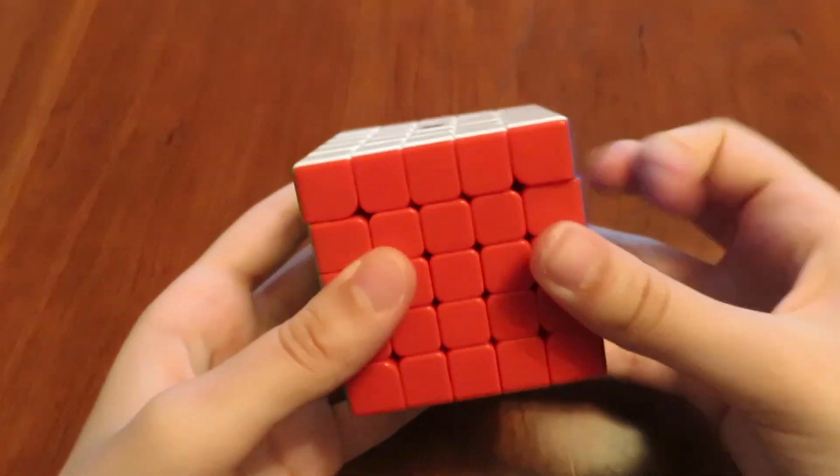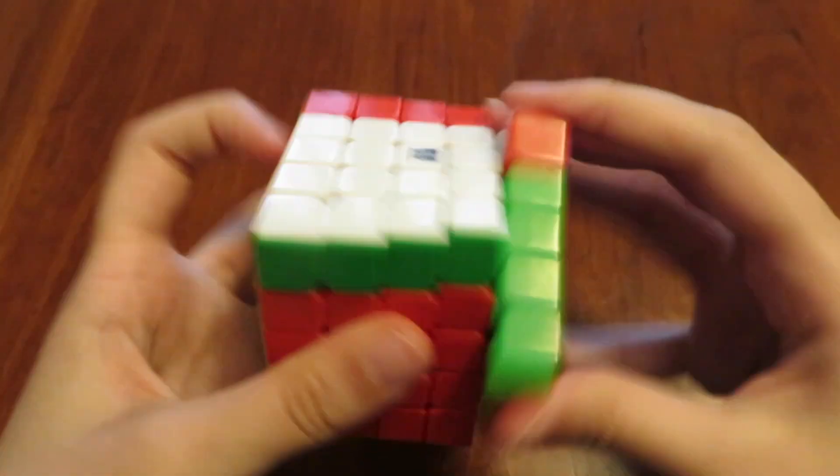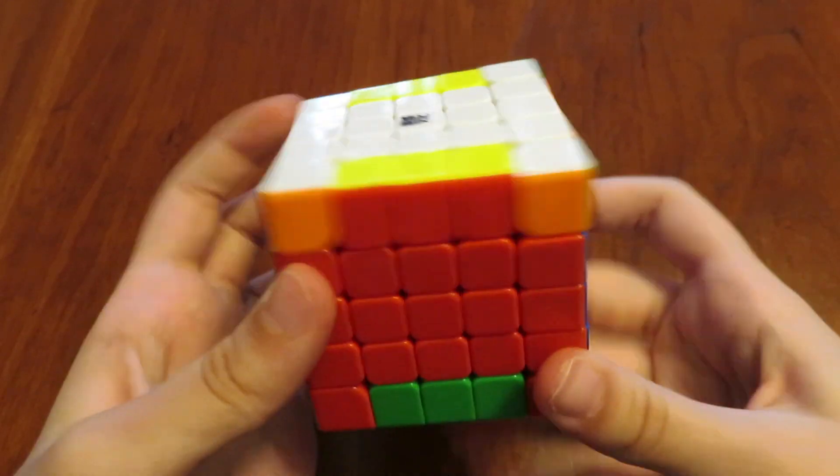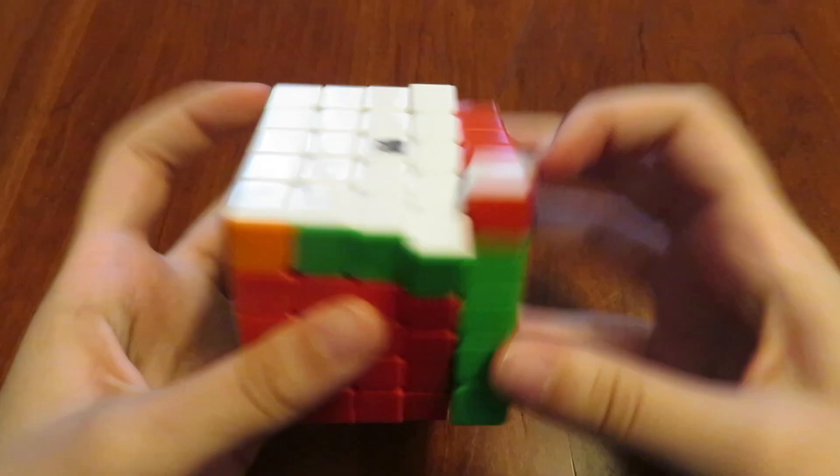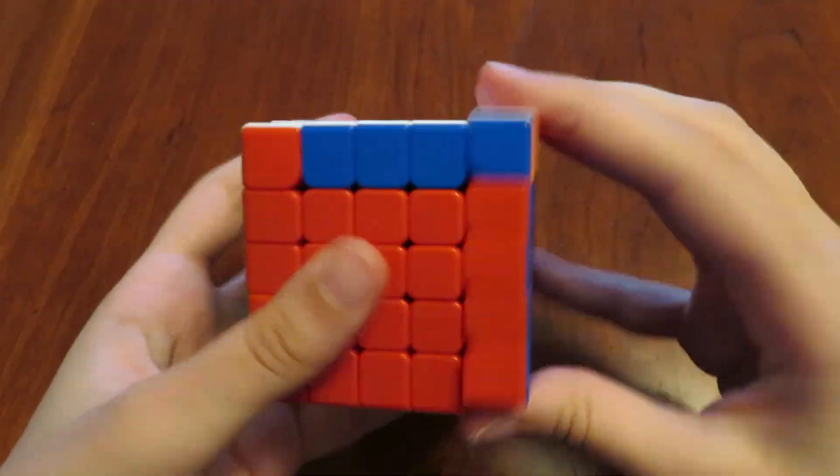The WRM is faster than the GTS-M. It was fast right out of the box, but it was a bit dry and scratchy. After some lubing and breaking in, it's not as dry but maintains a crispy feel. I like the faster speed as it makes algorithm execution faster.